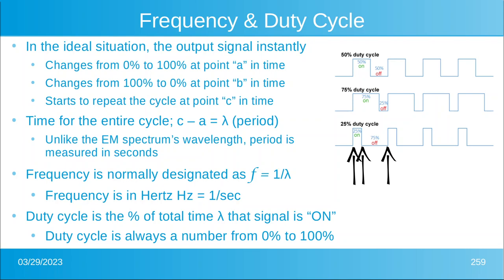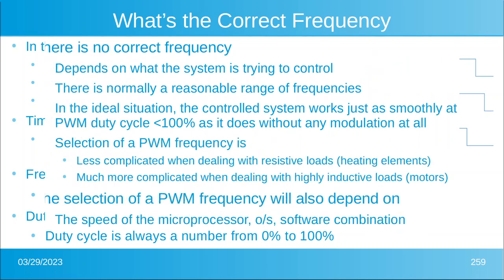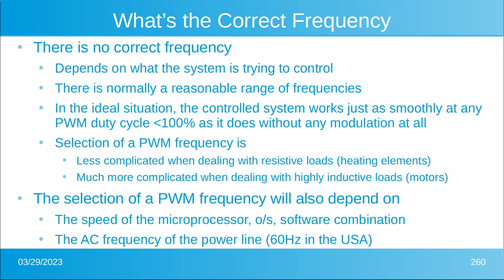Unlike the electromagnetic spectrum, period in PWM world is measured in seconds, not in wavelength or nanometers. Frequency is normally designated as one over the period, and frequency is in Hertz. Duty cycle is always a percent — it is the percent of total time during the period that the signal is on, and it is always a number from zero to a hundred percent.